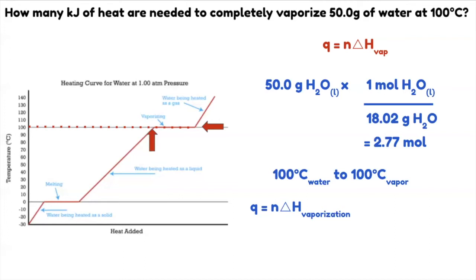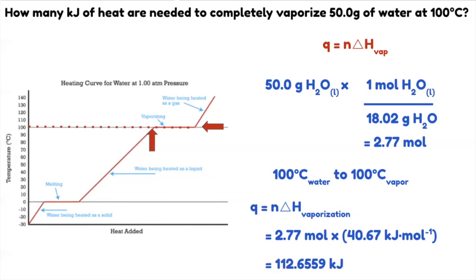Using 2.77 moles to solve for Q: 2.77 moles times 40.67 kilojoules per mole. This value is constant for water. Solving this, you will get 112.6559 kilojoules. Following the correct significant figures — you have three significant figures — the final answer is 113 kilojoules.